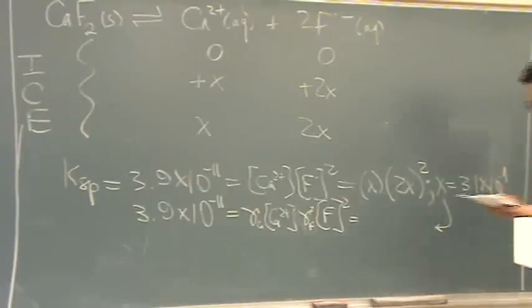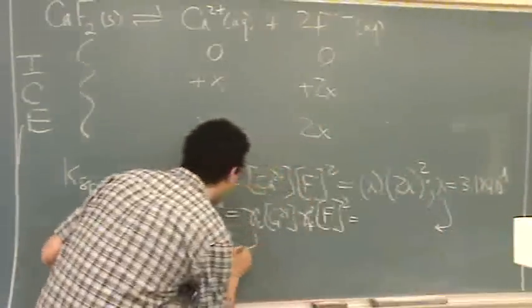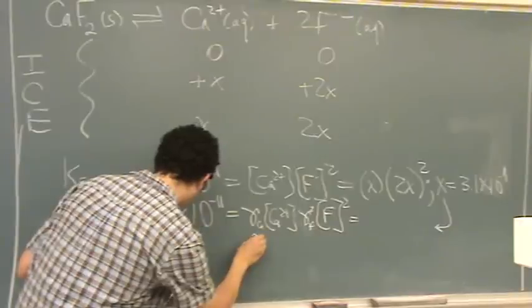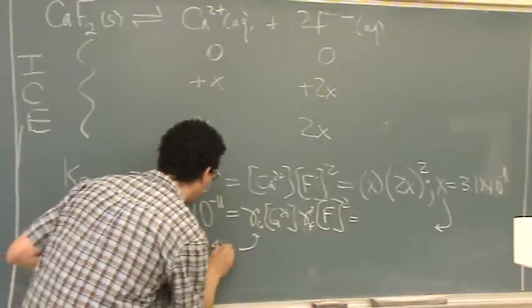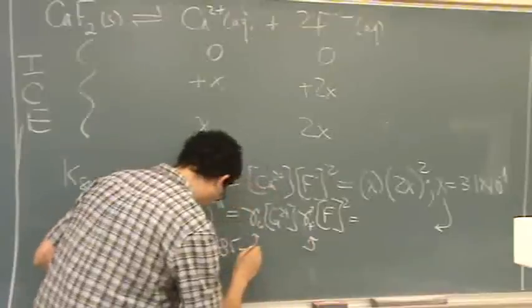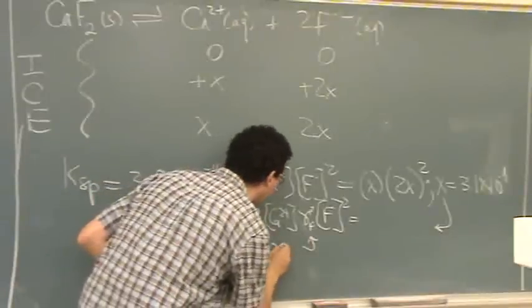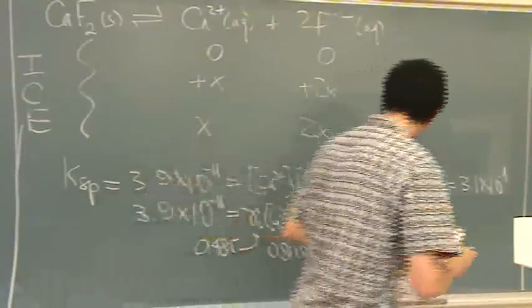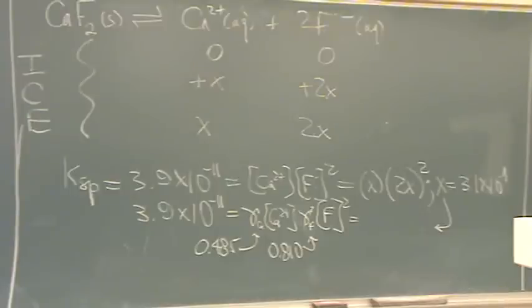So, then the gammas are given. I'll write those down below. Gamma for calcium is given. It's 0.485. And, gamma for fluorine is given. And, that's 0.810. So, all you're going to do is add those coefficients there. And, they're called activity coefficients. They're really constants.